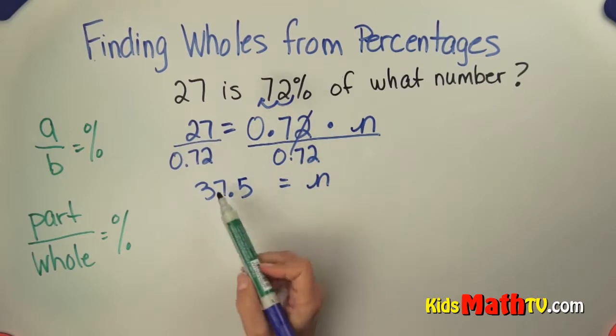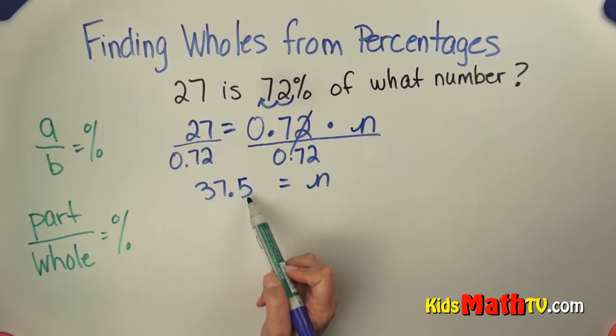So if you got 27 out of 37.5 total points possible, you got a 72%.